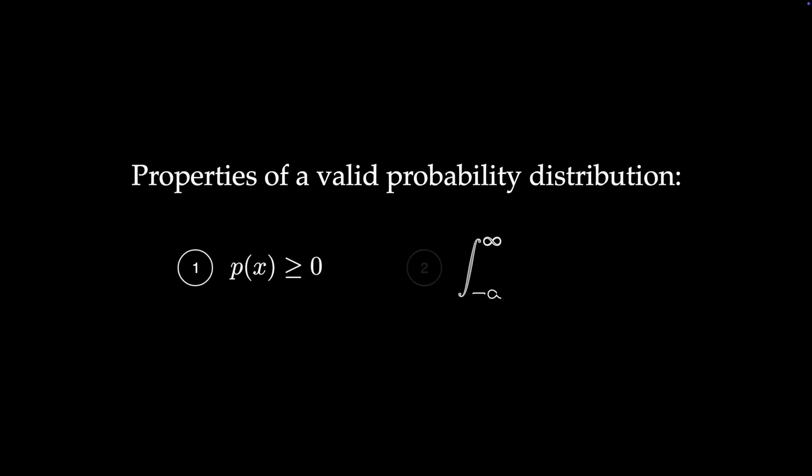Even despite these mind-blowing demos, you might still be wondering what all the hype is about. To explain the full power of MCMC, we must examine some properties of valid probability distributions. For a function p of x to represent a valid probability distribution, two properties must hold. First, p of x must always be greater than zero, and second, p of x must integrate to one.